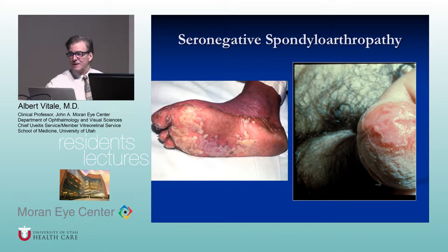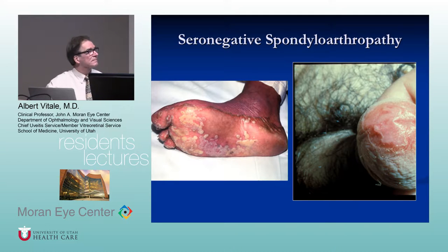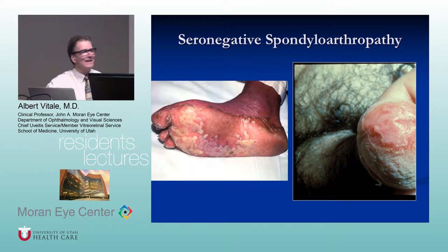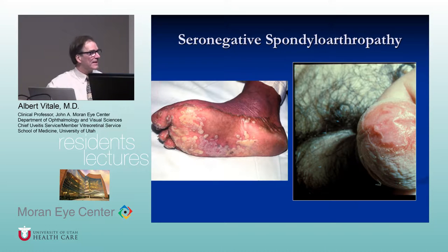Looking at clinical findings on the photograph — keratic precipitates on the right, associated with reactive arthritis, which is no longer called Reiter's syndrome because he was a Nazi and they're expunging him from the lexicon, along with Wegener. Of course, circinate balanitis is also a finding.